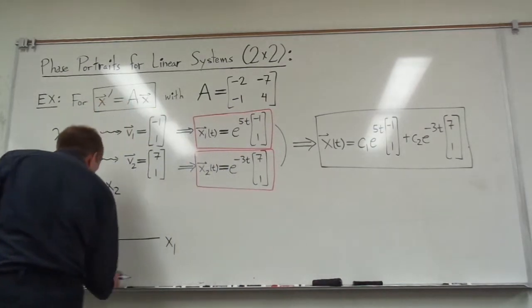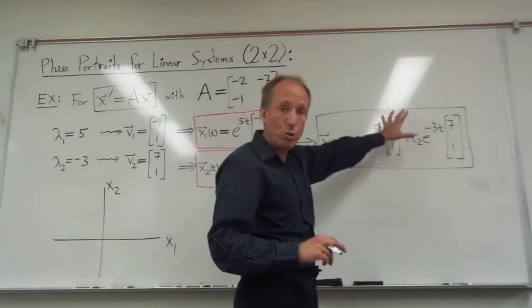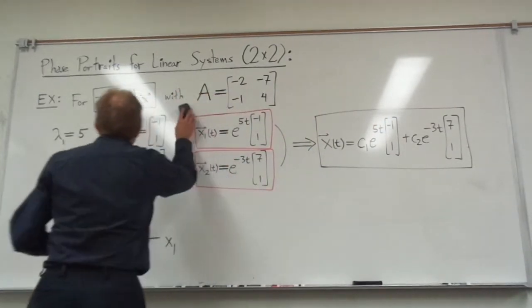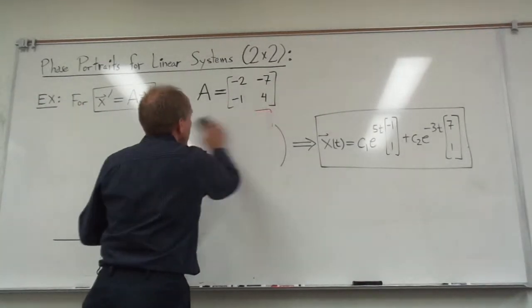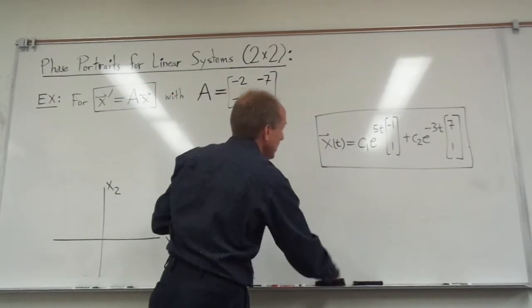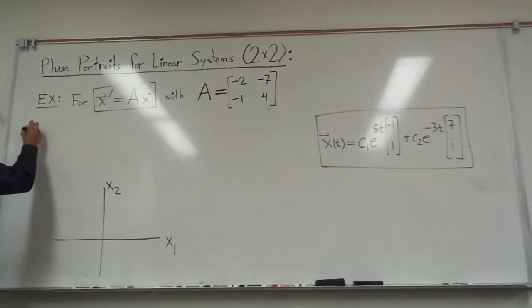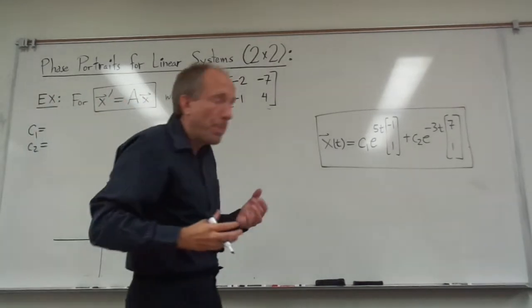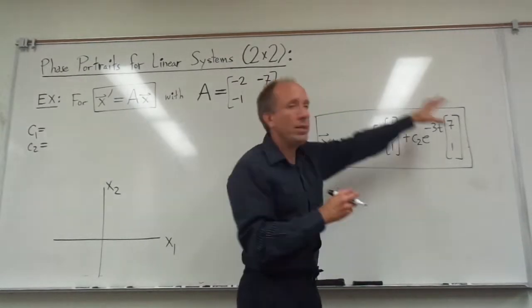To come up with the phase portrait what you need to do is draw some specific solutions here. And the ones that I'm going to focus on, I'm going to go ahead, we have all this stuff already figured out, so I'm going to erase this and just keep track of my general solution over here. So we need this part right here. I am going to choose various values of c1 and c2. Specific numbers that will give me specific solutions within this general solution.